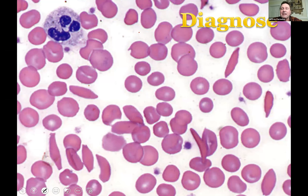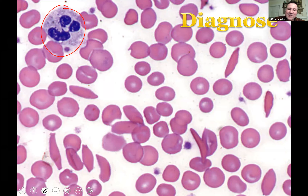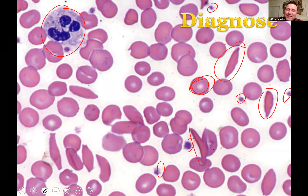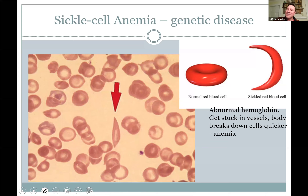Take a look at this slide. Some of you will recognize it — this is a white blood cell, those little fragments are platelets, these are normal red blood cells. But these guys — this is sickle cell anemia. Sickle cell anemia is a disease you studied in biology — it's a genetic disease where you have one base pair mutation that causes a different amino acid in the protein hemoglobin.